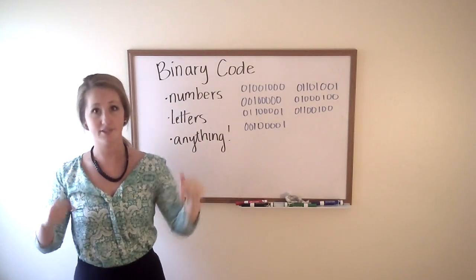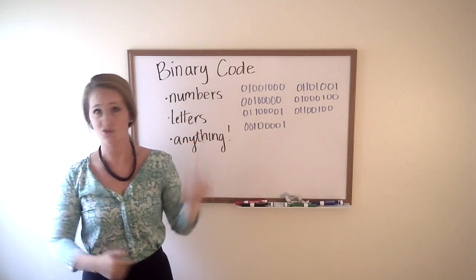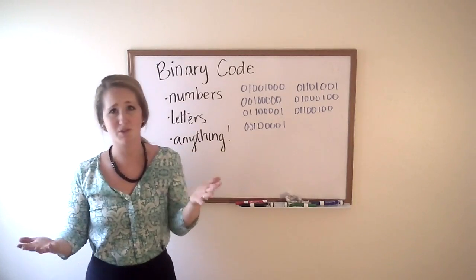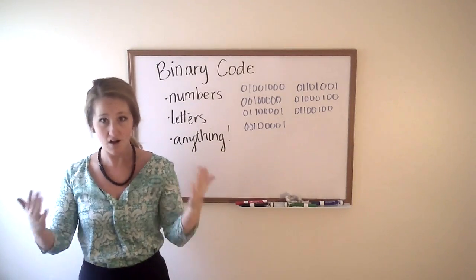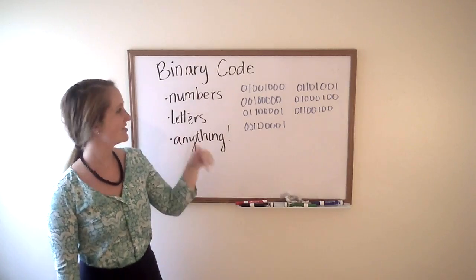Ones meaning on, zeros meaning off. So think of like a light switch, which in some cases in super old computers there was an actual switch which was either on or off. One being on, zero being off.